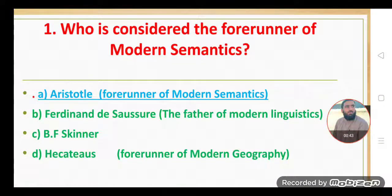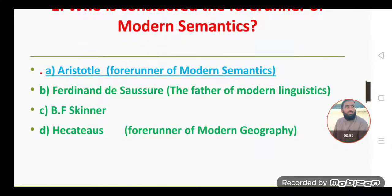But the other options are also very important. Ferdinand de Saussure is considered the father of modern linguistics. B.F. Skinner is a psycholinguist. And we have another very great name, Hecataeus, the forerunner of modern geography.